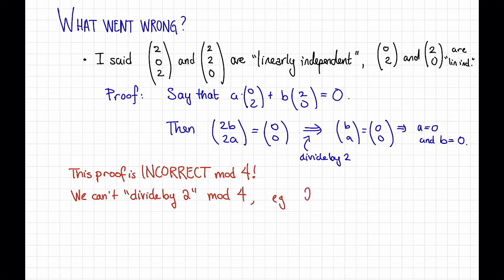So this proof is just fine over the real numbers, for example, but it's wrong mod 4. The reason is that dividing by 2 mod 4 doesn't really make sense. And indeed, it is the case that we can have a non-trivial linear combination of these things that's equal to 0. For example, 2 times the vector (0, 2) plus 2 times the vector (2, 0) is equal to the vector (4, 4), which is equal to the vector (0, 0) mod 4.